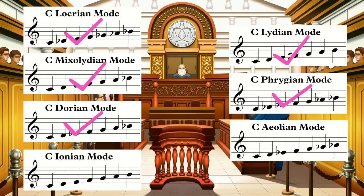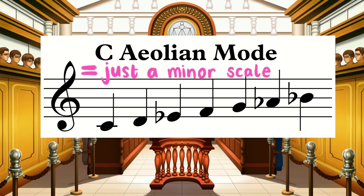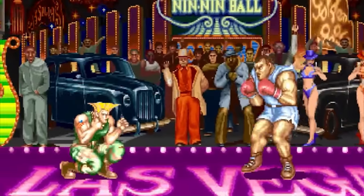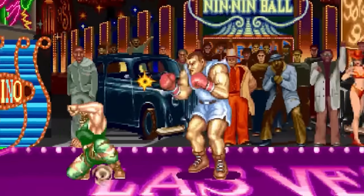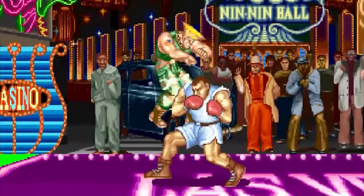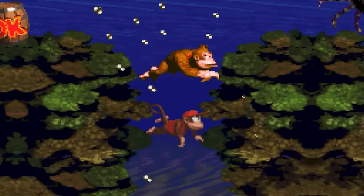As we begin closing in on the end of this major mode series, we're left with the less exciting of the seven scales. The Aeolian mode, which I'm going to talk about today, is after all just a fancy Greek name for the regular old minor scale. However, it is still interesting to analyze how the Aeolian mode, or natural minor scale as it's more colloquially called, differs in sound and feeling from the other minor scales that are commonly used. So let's dive into the Aeolian mode.